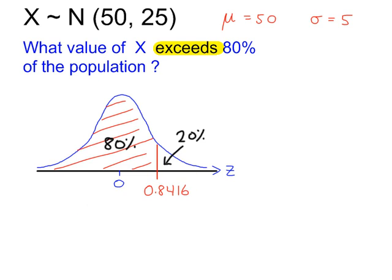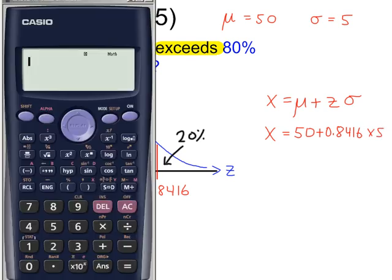And then using the formula, x is equal to the mean plus z sigma. And then if we substitute the values in, the mean is 50 plus 0.8416 times 5. 50 plus 0.8416 times 5 equals 54.2.